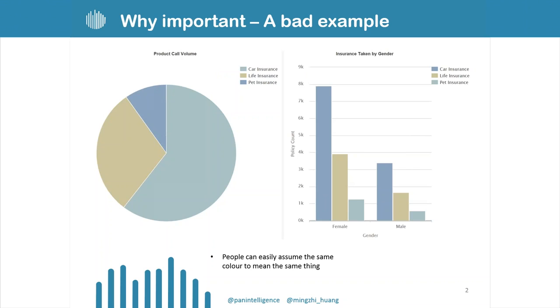People can easily assume the same color to mean the same thing. But if you look at these two charts, blue is used for pet insurance on the left while it's used for car insurance on the right. If people look at the first chart and start assuming blue means pet insurance, they might just get it wrong on the right chart.